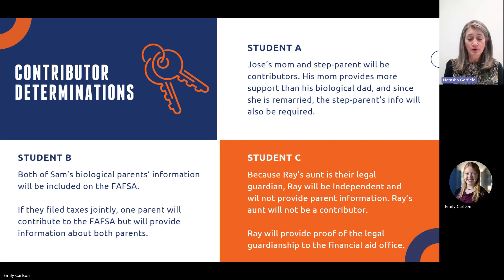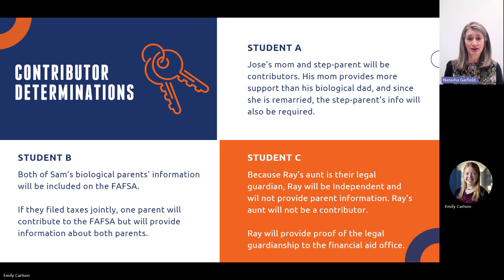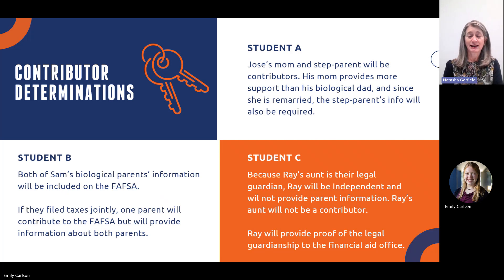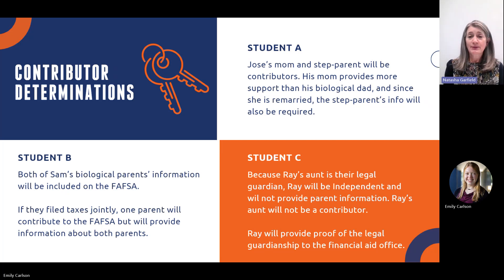For student A: Jose's parents are divorced. His mom remarried when Jose was 13. He lives with his mom and step-parent during the week and spends time with his dad on the weekends. His mom pays for his cell phone bill and most other expenses. In this case, we're going to assume that mom is providing more support than biological dad. So Jose's mom and his step-parent will be the contributors. Because mom is remarried, the step-parent's information will also be required, even if the step-parent does not provide any financial support for Jose.